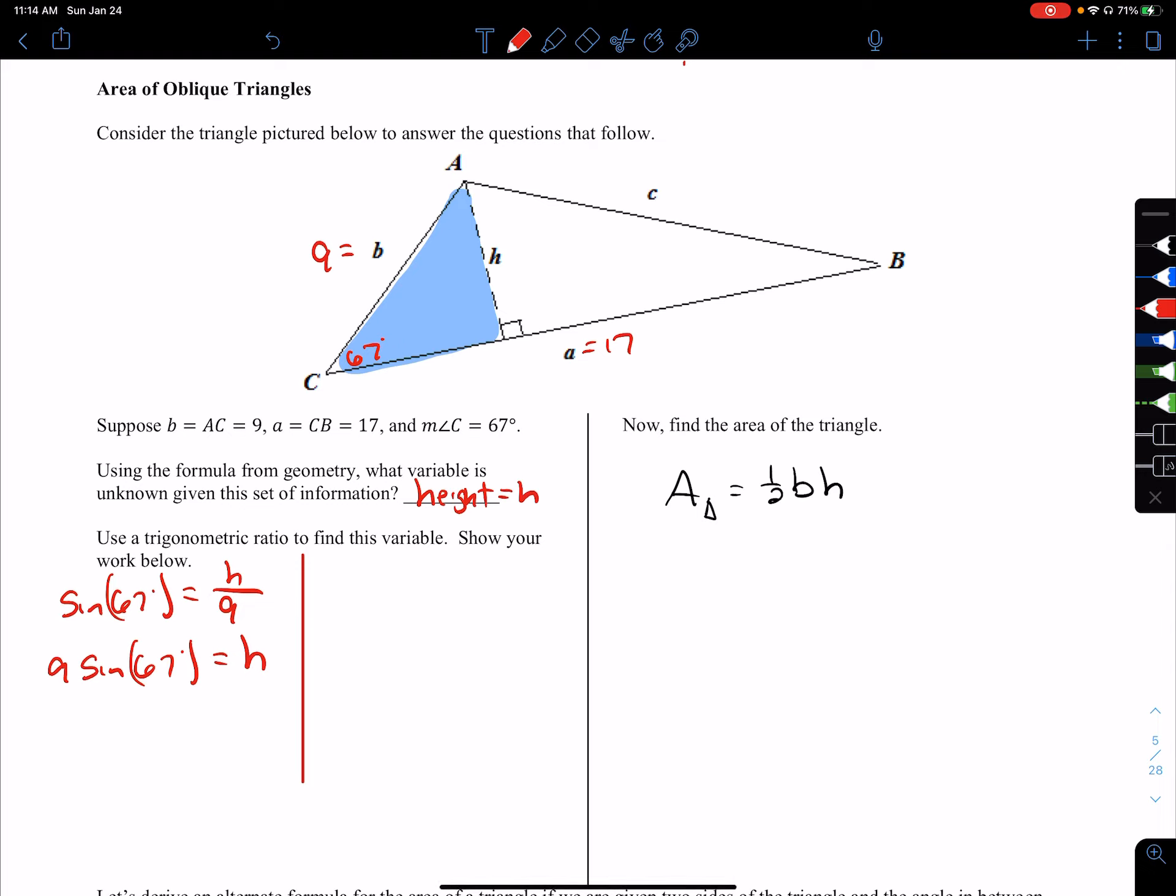Once we know that, we can use the standard formula for a triangle: one-half the base times the height. The base is 17, and now we know the height is 9 sine of 67 degrees. So the area is one-half times 17 times 9 sine of 67 degrees. If you put that into your calculator, it's about 70.419. We weren't given units, so we'll just say it's square units.